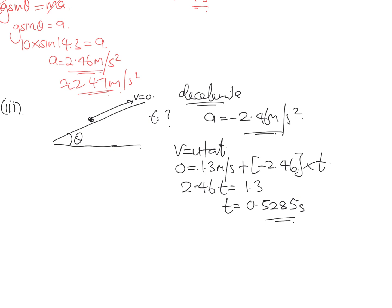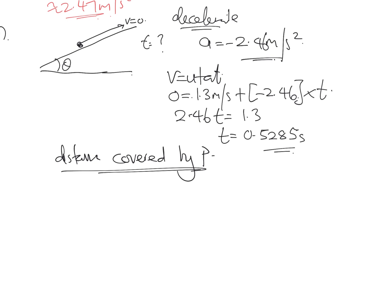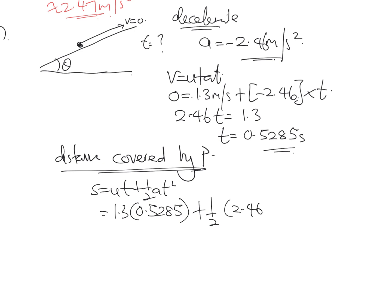At that same time, the distance covered by P is found using S = UT + ½AT². For P moving downward, U = 1.3 m/s and acceleration = +2.46 m/s². So S = 1.3 × 0.5285 + 0.5 × 2.46 × (0.5285)², giving S ≈ 1.03 metres.